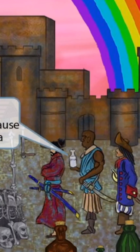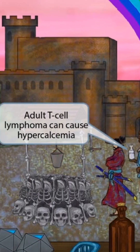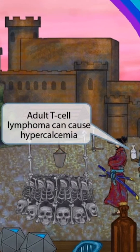Notice that we've shown the West African guy with a bottle of milk in his hand. He's almost out of milk, so he brought this container to be filled up with water at the well. Milk is notoriously high in calcium, so we've shown the milk container here to help you remember that adult T-cell lymphoma can cause hypercalcemia.